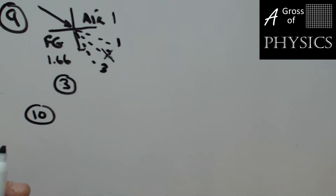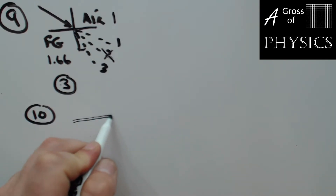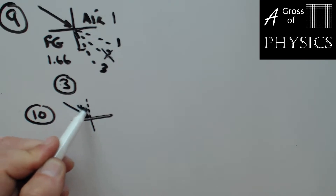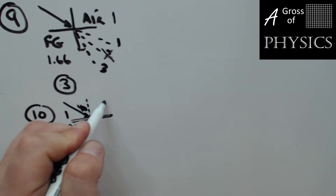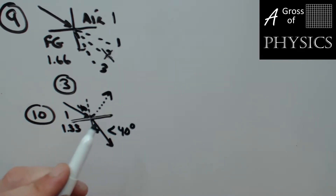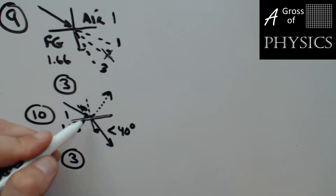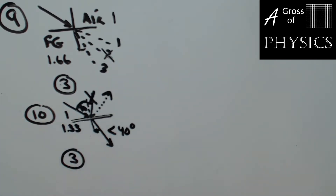Number 10: we have diagrams showing different reflected and refracted rays. Remember, light will reflect, refract, and absorb at every boundary. The original ray comes in at 40 degrees going from air into water, index 1 to 1.33. The reflected ray bounces off the surface of the water, and the refracted ray turns toward the normal, so its angle is less than 40 degrees. That looks like choice three. Choice four is wrong because the reflected ray must be the same angle as the incident ray.